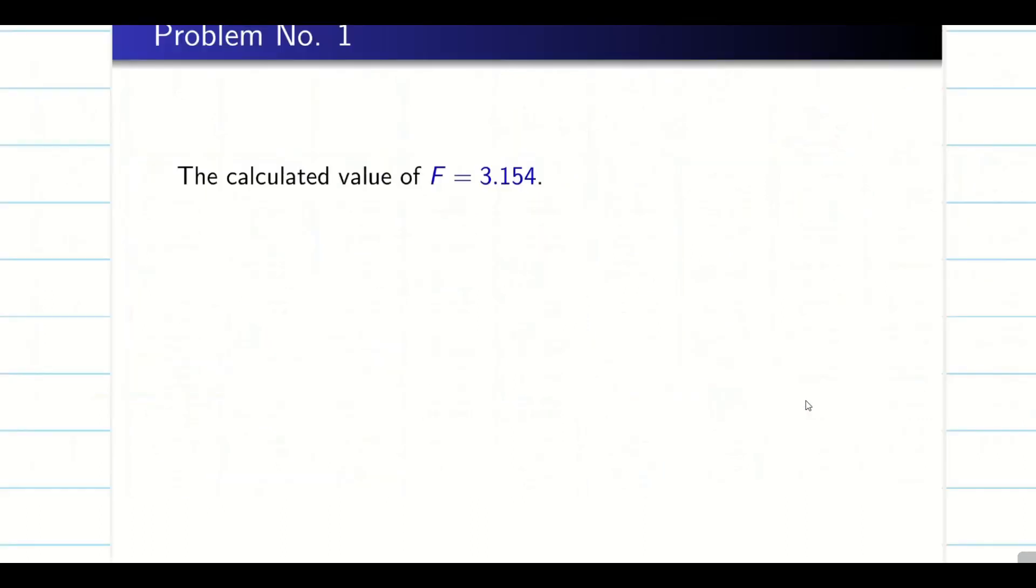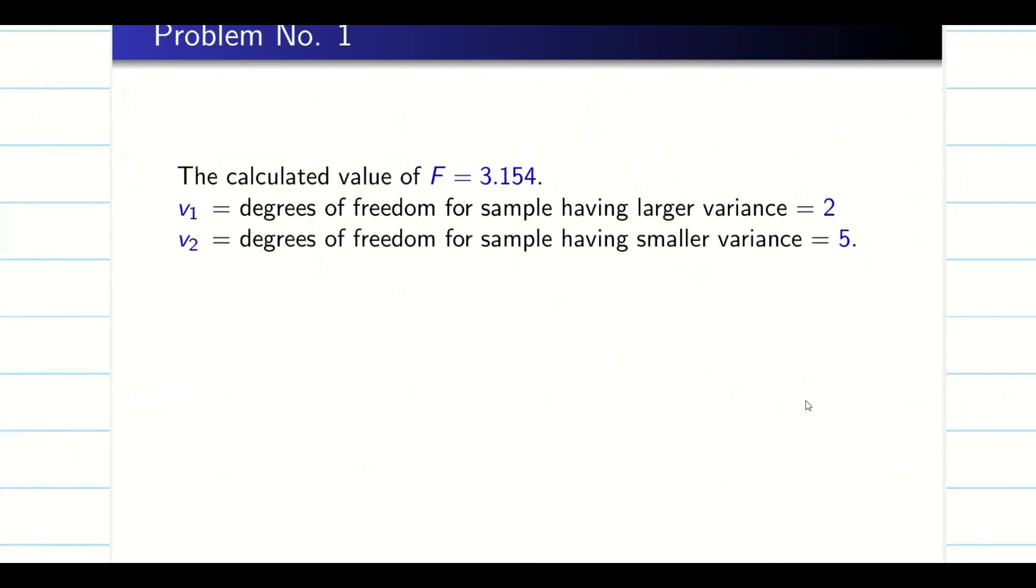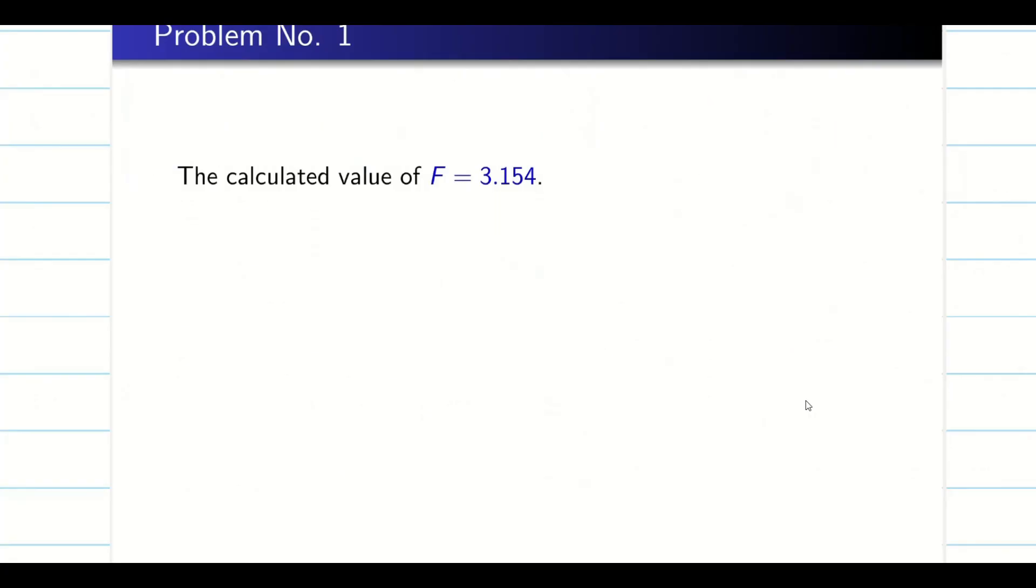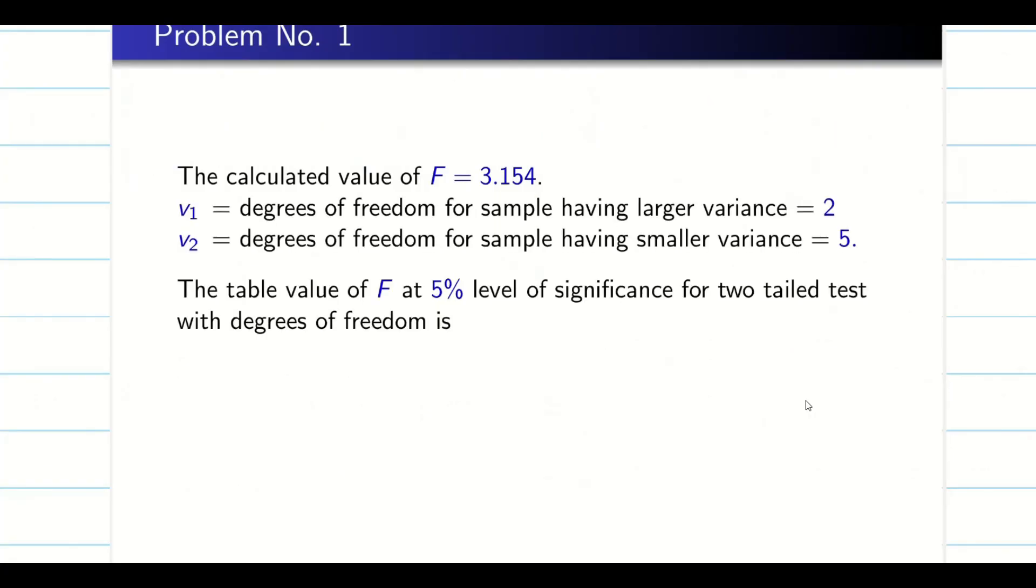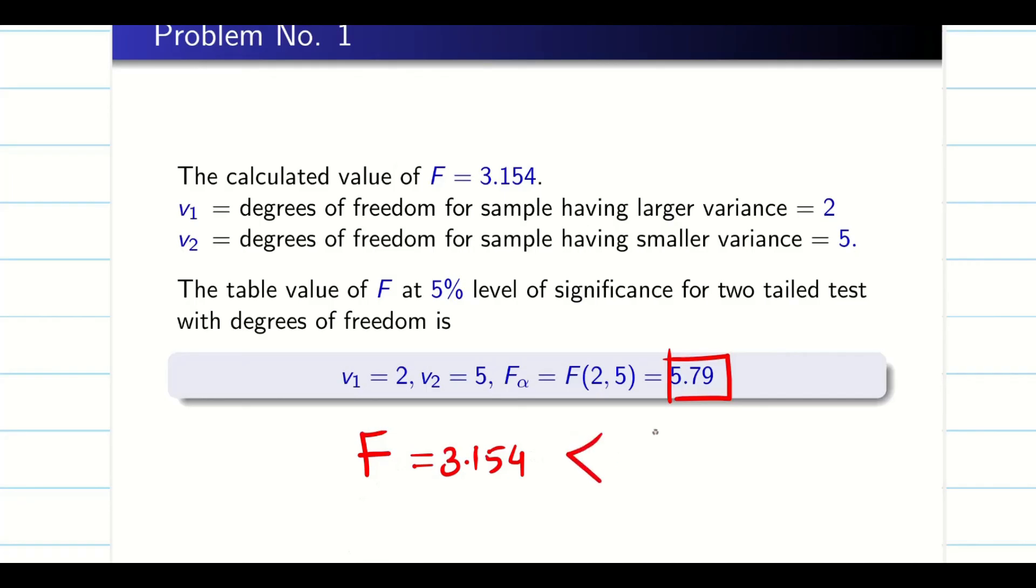From the table, we are going to write the calculated value as well. So the degree of freedom we found, my table value is 5.79. So I conclude that F is equal to 3.154, which is less than F alpha, that is 5.79. So what we conclude now? H₀ is accepted. So that means all the 3 methods, there is no difference. Hope you understand this problem guys.